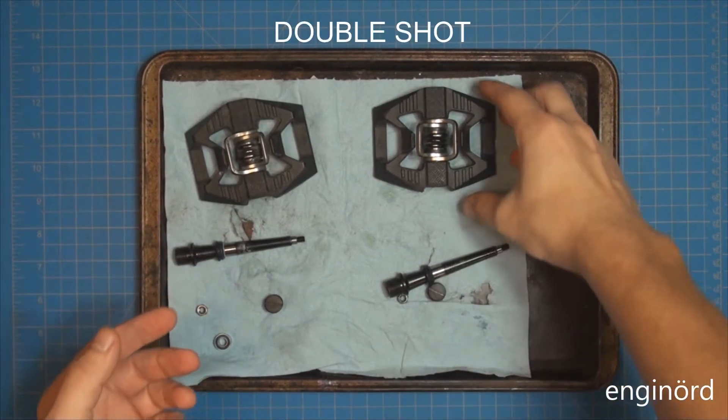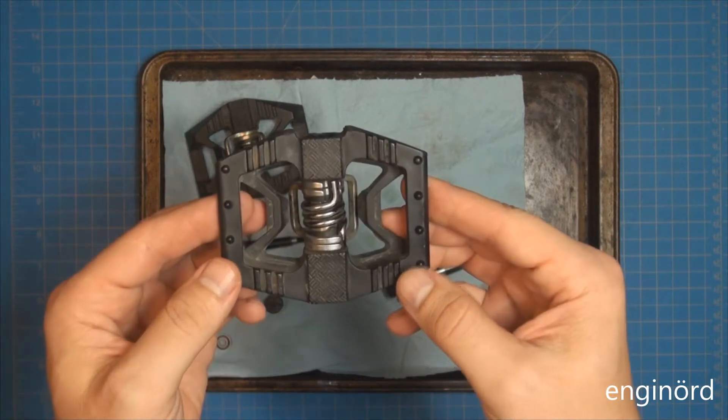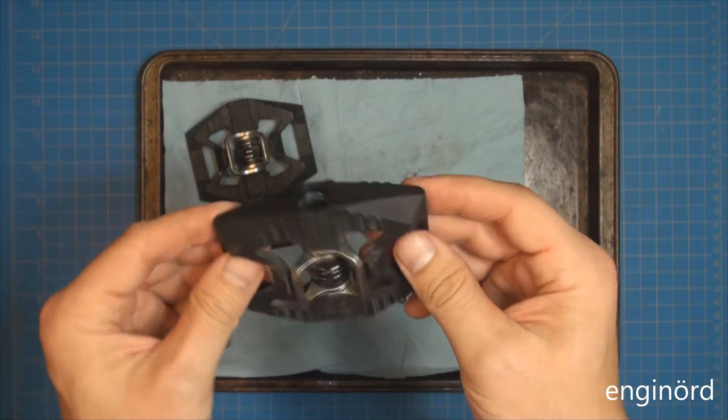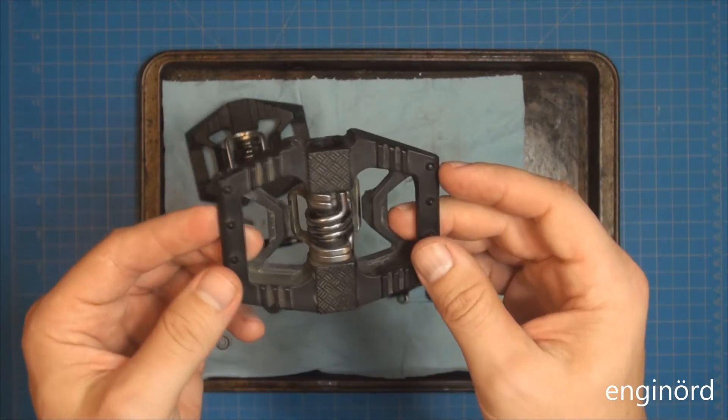These are Crank Brothers Candy 1 pedals. As you can see, it's got a plastic construction. So the pedal body itself is plastic.